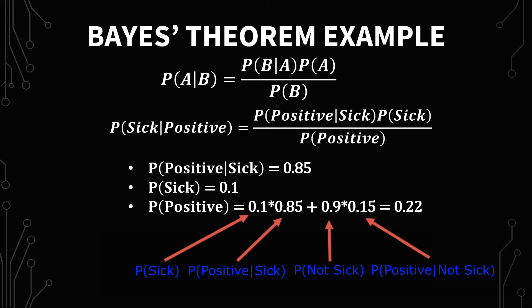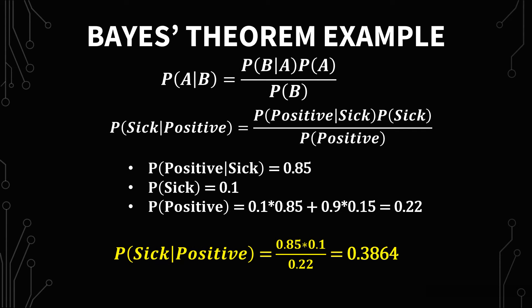Finally, we have all of our numbers. What's the probability that you're sick given that you're positive? And that is 0.85 times 0.1 over 0.22, which gives you 0.3864 or around 39%. This theorem is really good at giving perspective on what a lot of people think are two-dimensional understandings of probabilities because there's a lot of context involved with these problems.